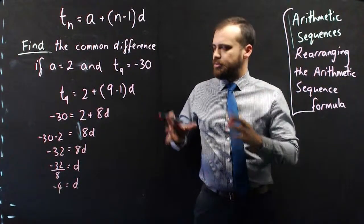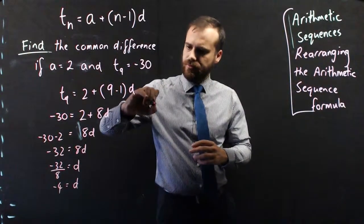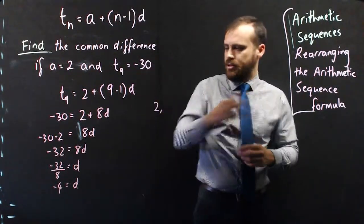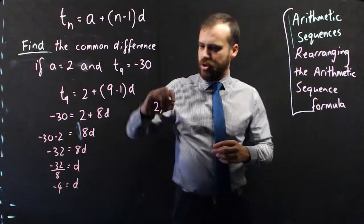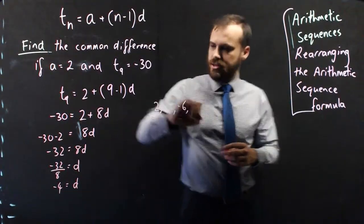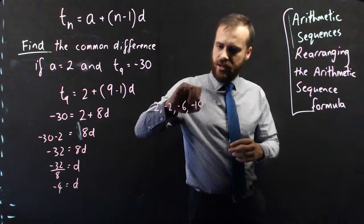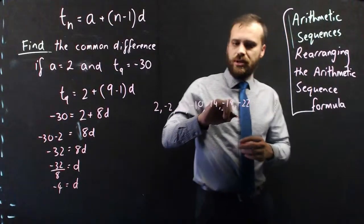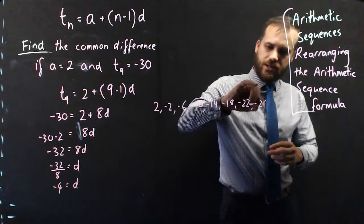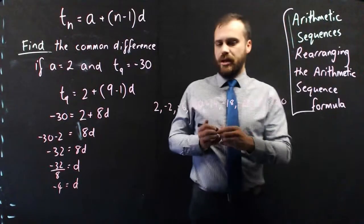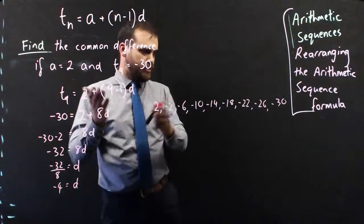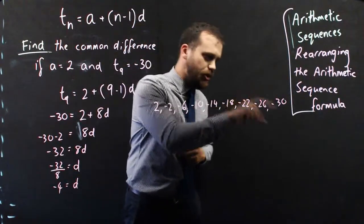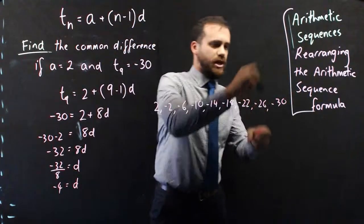So what does that mean? The first term was 2, the common difference is negative 4, so I'm subtracting instead of adding. 2 minus 4 is negative 2, minus 4 is negative 6, minus 10, minus 14, minus 18, minus 22, minus 26, minus 30. I was told that term 9 is negative 30. That's term 1, 2, 3, 4, 5, 6, 7, 8, 9. That checks out.